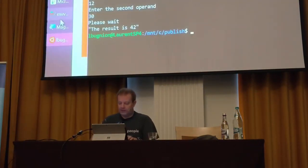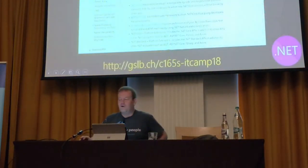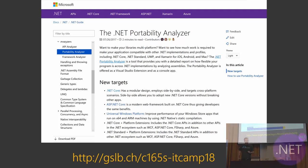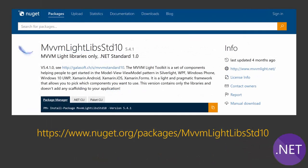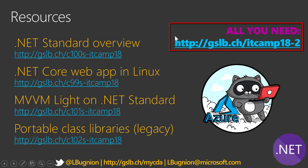I'm at the end of the presentation — 38 seconds over, my Swiss sense is tingling. If you want to start with .NET Standard, a good place to start is the .NET Portability Analyzer, which lets you run your assemblies through it to see what's not compatible. The NuGet package for MVVM Lite .NET Standard version is also available. All resources including slides, source code, and the repo are at gslb.ch/itcamp18-2. Thank you very much, I hope to see you this afternoon at 1:45 for my other session. Thank you so much.